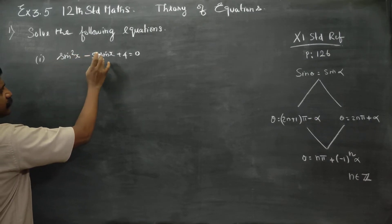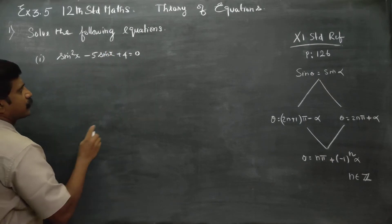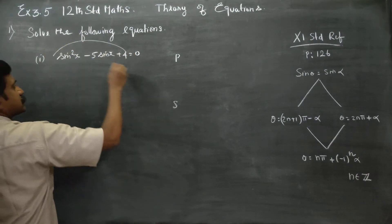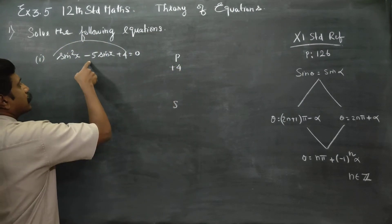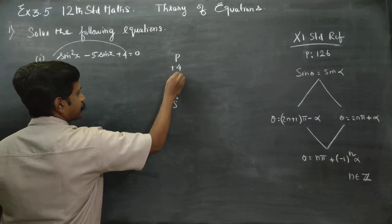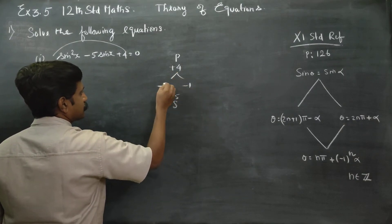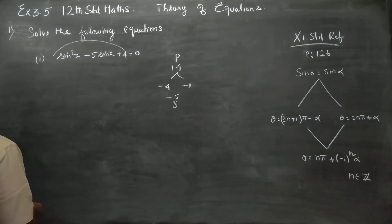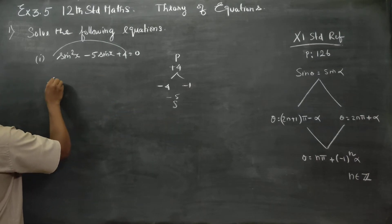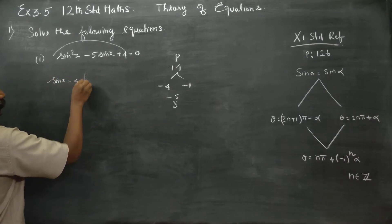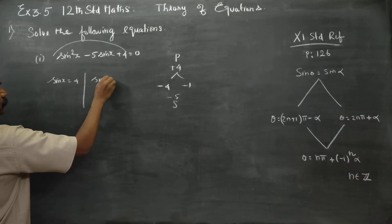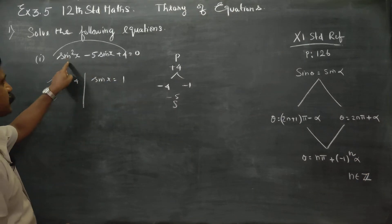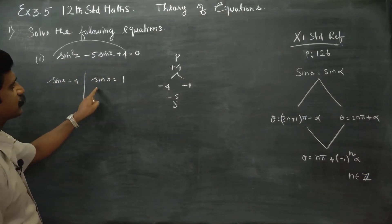This is x square minus 5x plus 4, and we need to factor it. We will go for product-sum method. My product is 4 and my sum is minus 5 — that is minus 4 and minus 1. So in the quadratic, x is equal to 4 and x is equal to 1. Replace x with sin x: sin x is equal to 4 and sin x is equal to 1.